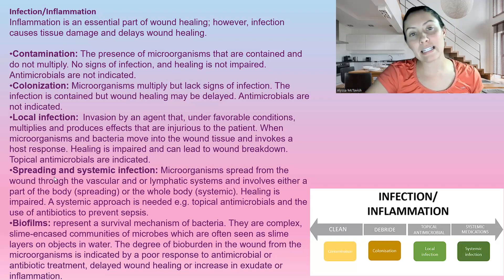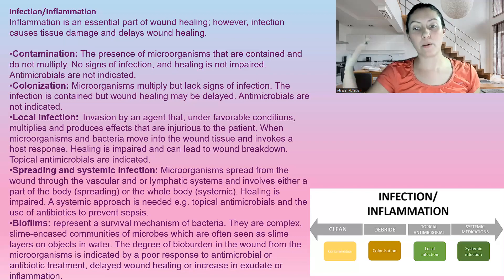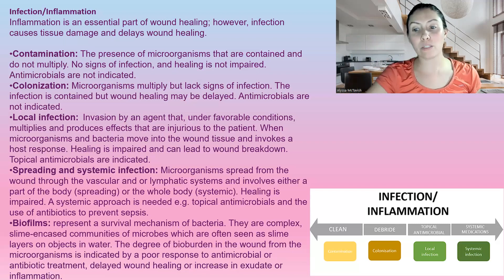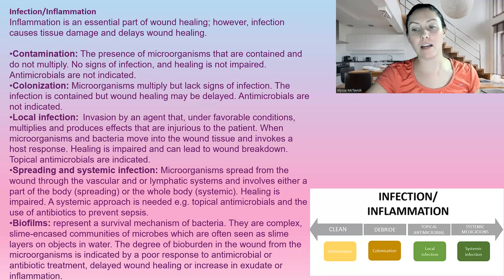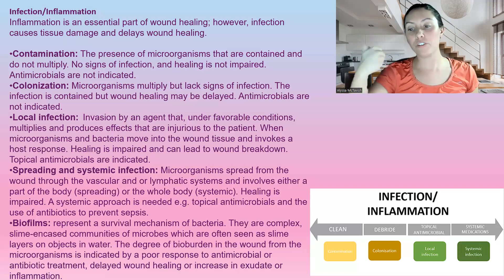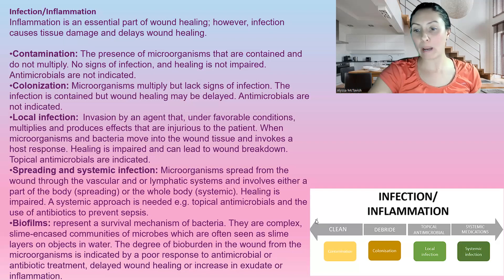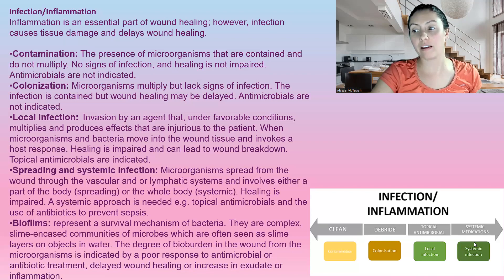Now, spreading and systemic infections — this is our STONIES. Microorganisms are spreading throughout the vascular or lymphatic system and involve either part of the body or the whole body systemically. Healing is impaired and a systemic approach is needed. Normally we'll use a topical antimicrobial and an antibiotic to prevent sepsis from happening. An antibiotic is required for systemic infections.